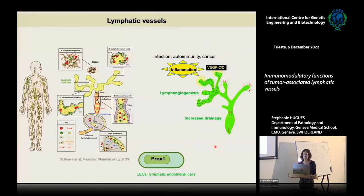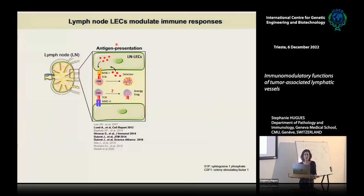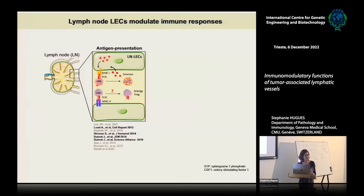This was just to present the lymphatic vessels, but why, as immunologists, are we interested in these lymphatic endothelial cells? Because they have been shown to modulate immune responses in many different ways. As Federica said, we first got interested in these cells because they were shown several years ago to function as antigen-presenting cells. It has been shown that they can present antigens that they endogenously express, or that they can capture through MHC class 1 molecules to CD8-positive T cells. They are very important in maintaining peripheral T cell tolerance because they can present self-antigens to self-reactive CD8 T cells and induce their deletion — for T cells that have escaped central tolerance in the thymus.